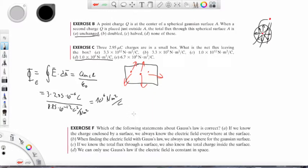In exercise F we are supposed to answer some questions about Gauss's law. First of all, if we know the charge enclosed by a surface, we always know the electric field everywhere at the surface. Let's think about this. So if we know the charge enclosed, we can tell what the E is at any given point in space. This is not true.